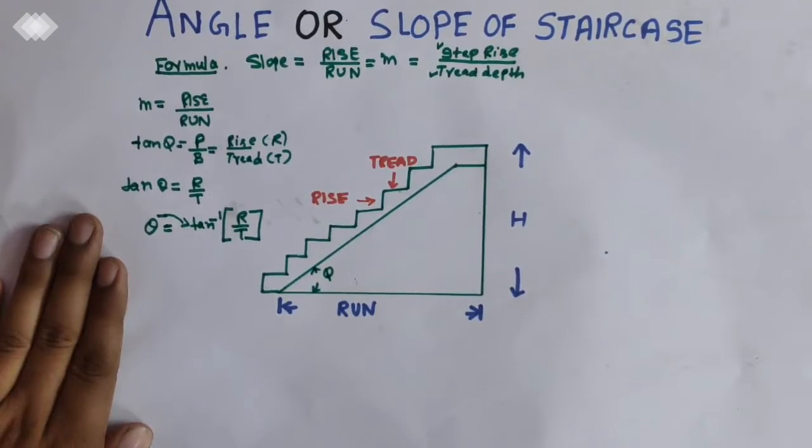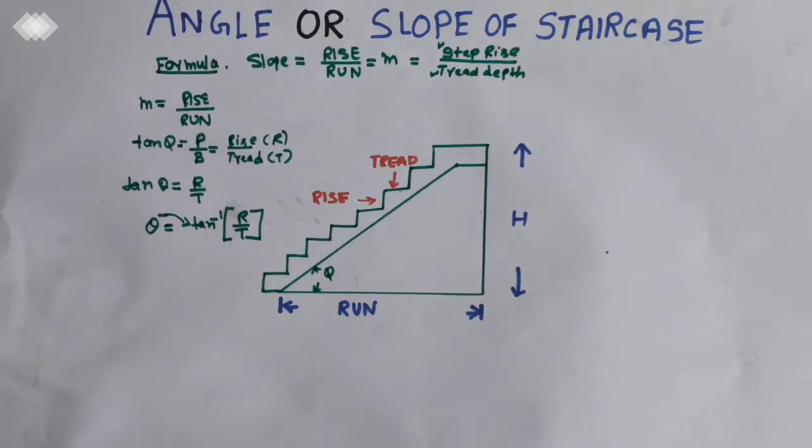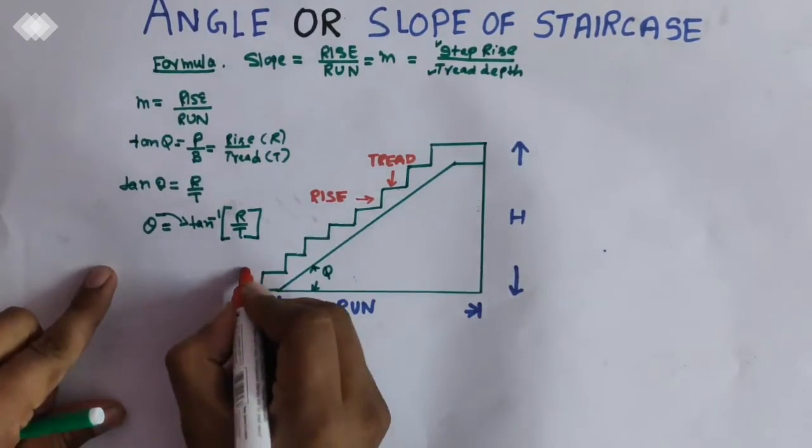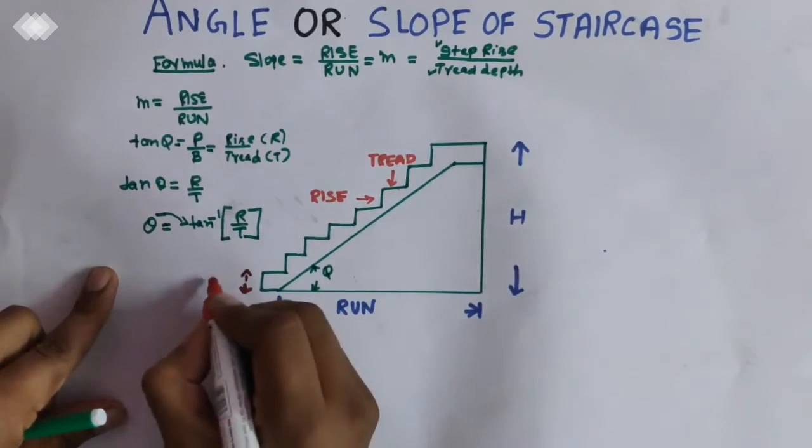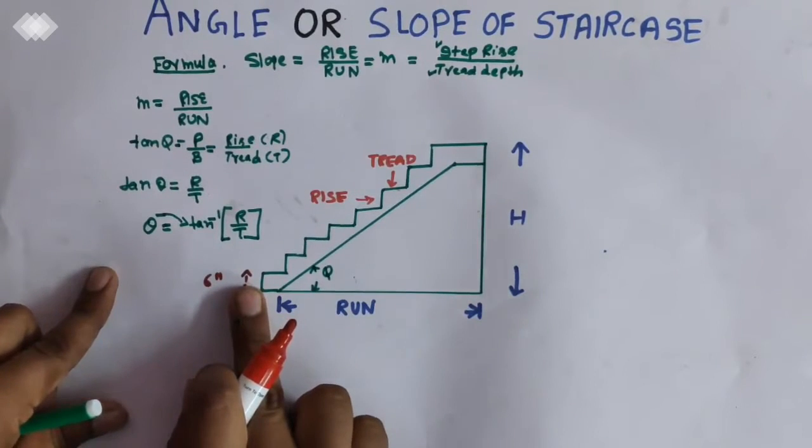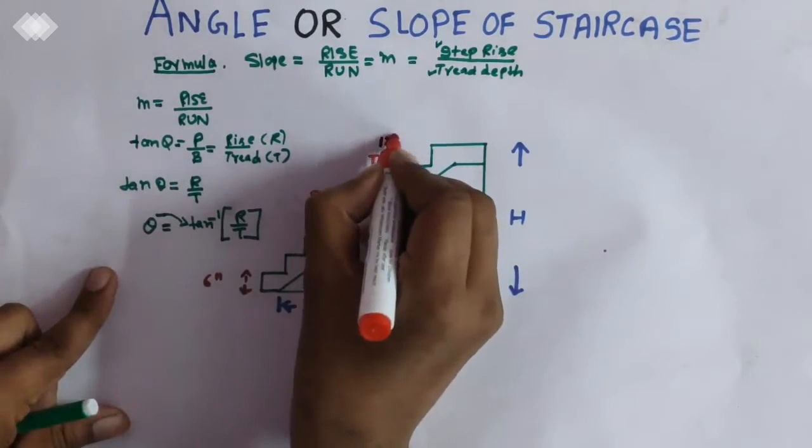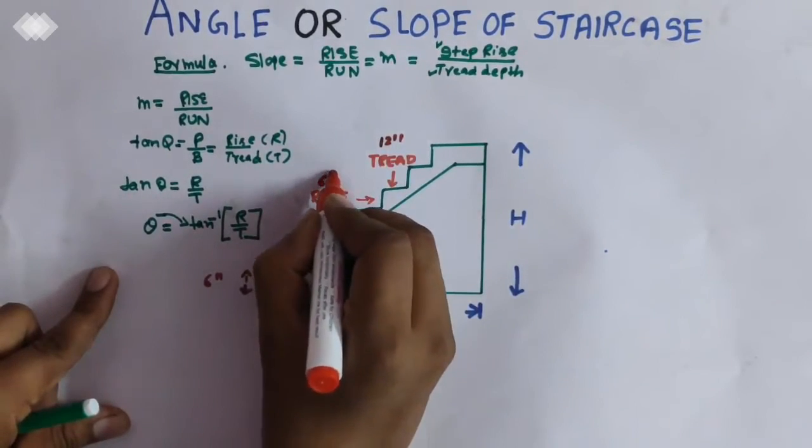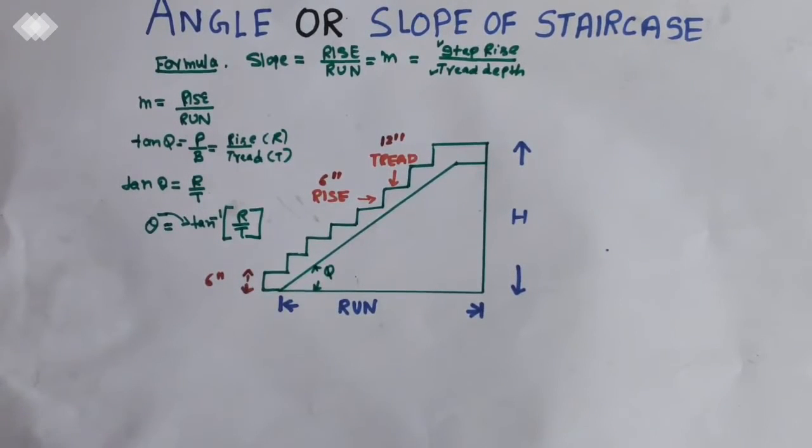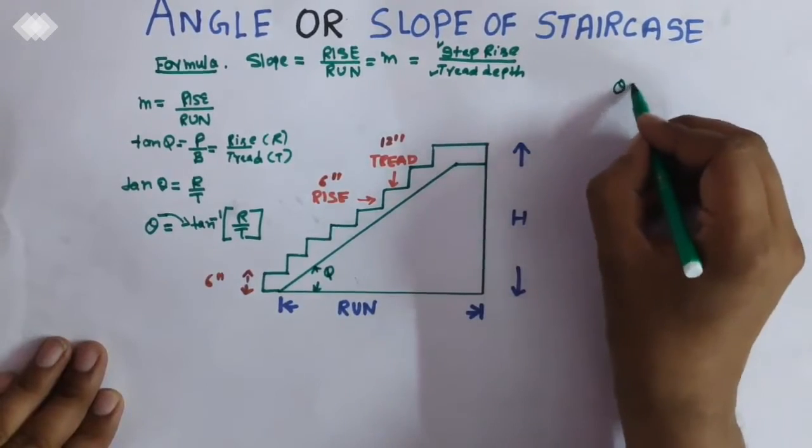So for example if we take the rise as six inches, six inches, and the tread if we take as 12 inches.